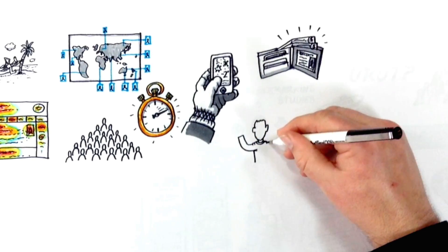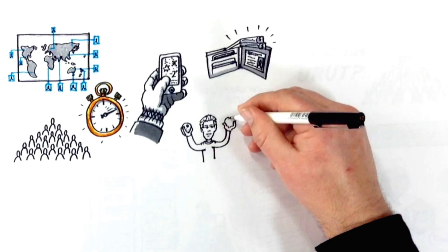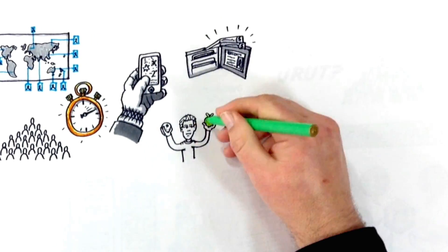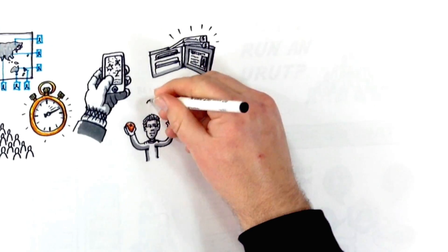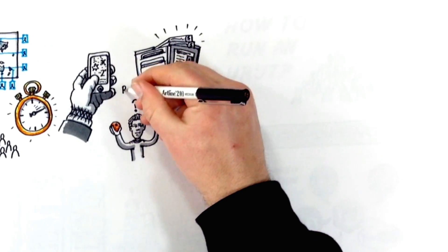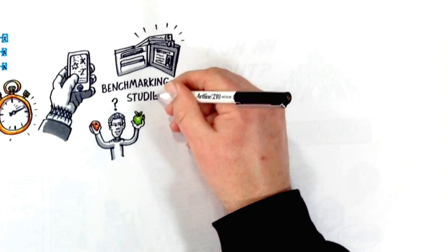It's also helpful in cases where you need to compare two or more products or interfaces. URUT is perfect for benchmarking studies comparing either competitive products or different iterations of your product. The ability to capture large sample sizes means that statistically significant differences between interfaces can be identified.